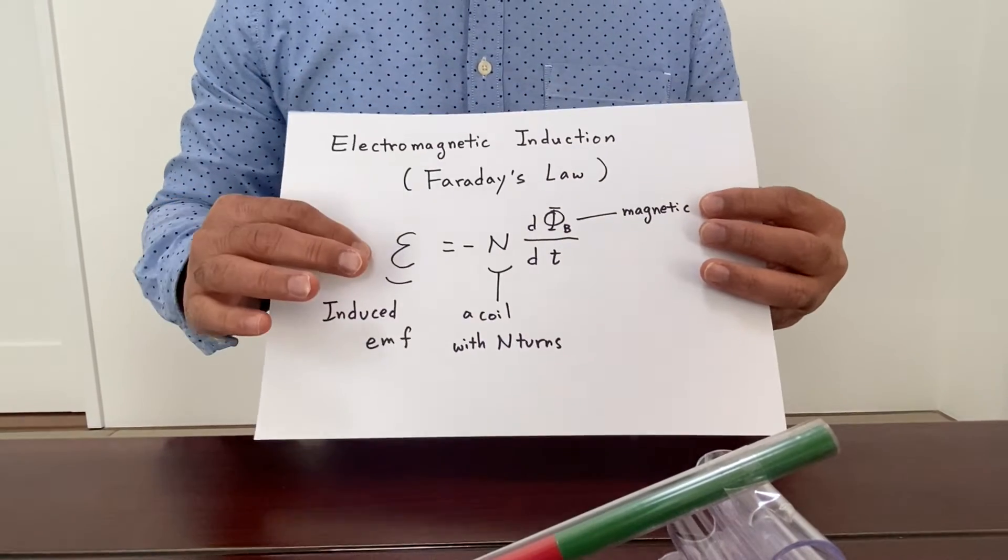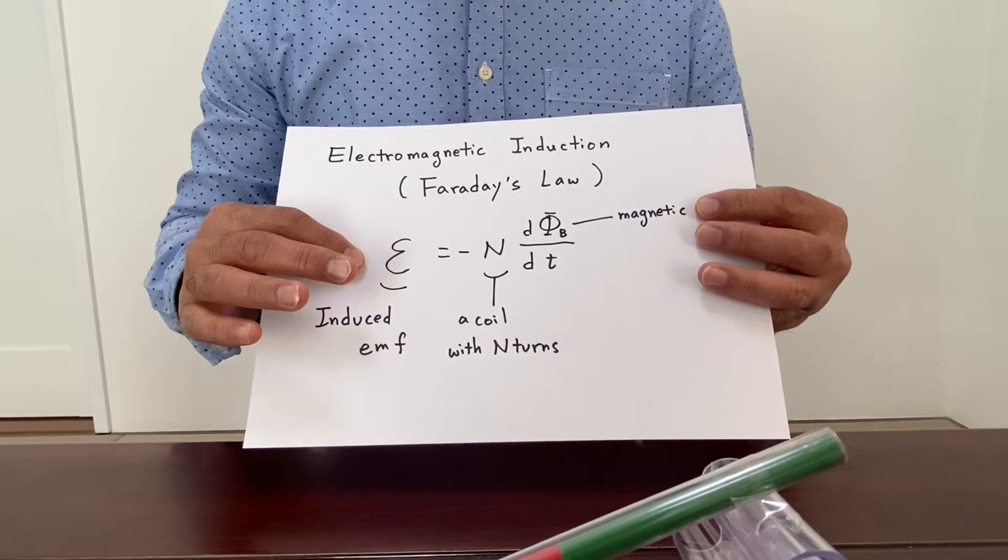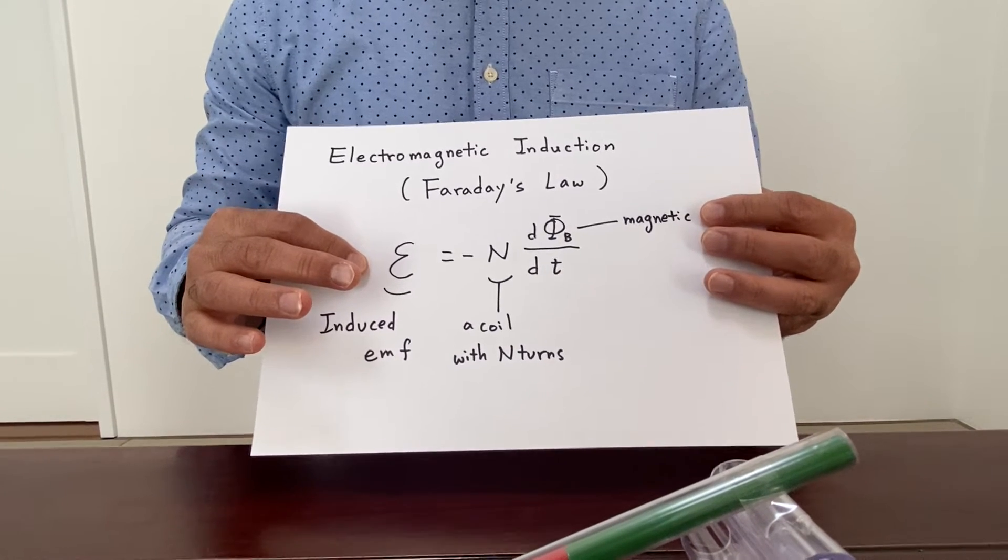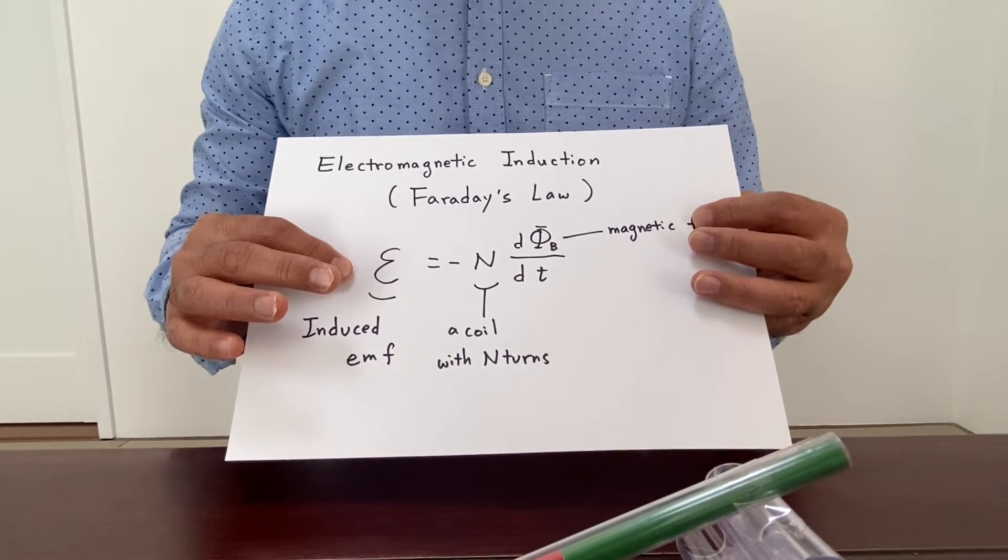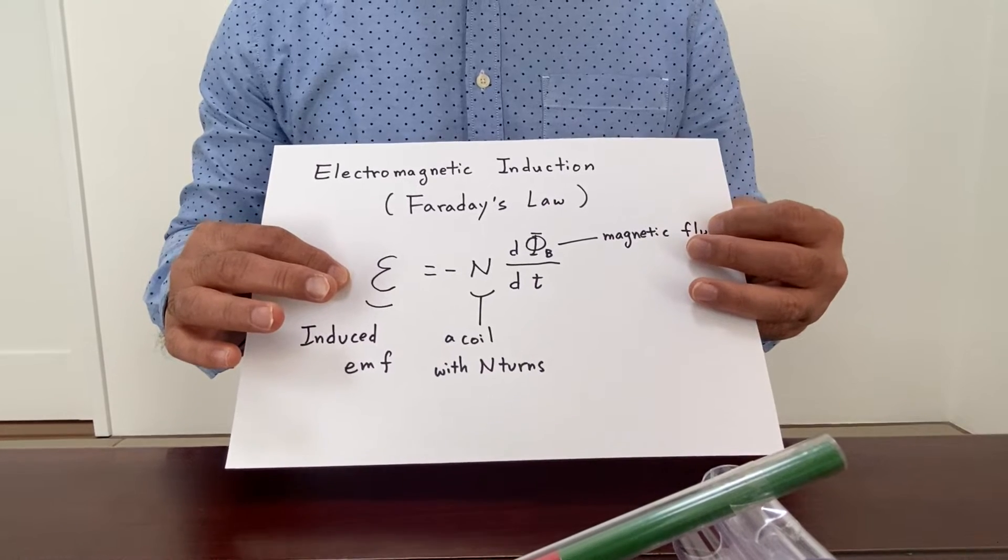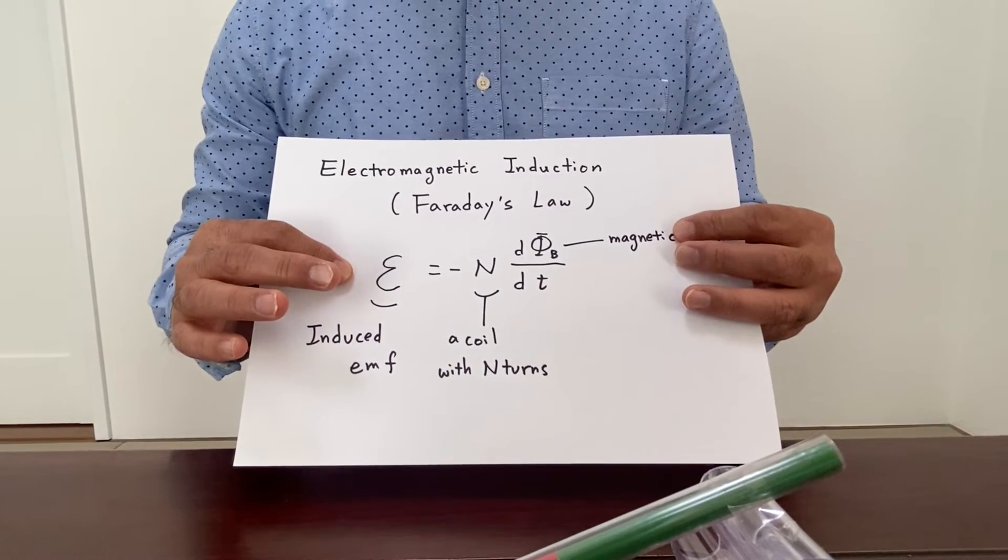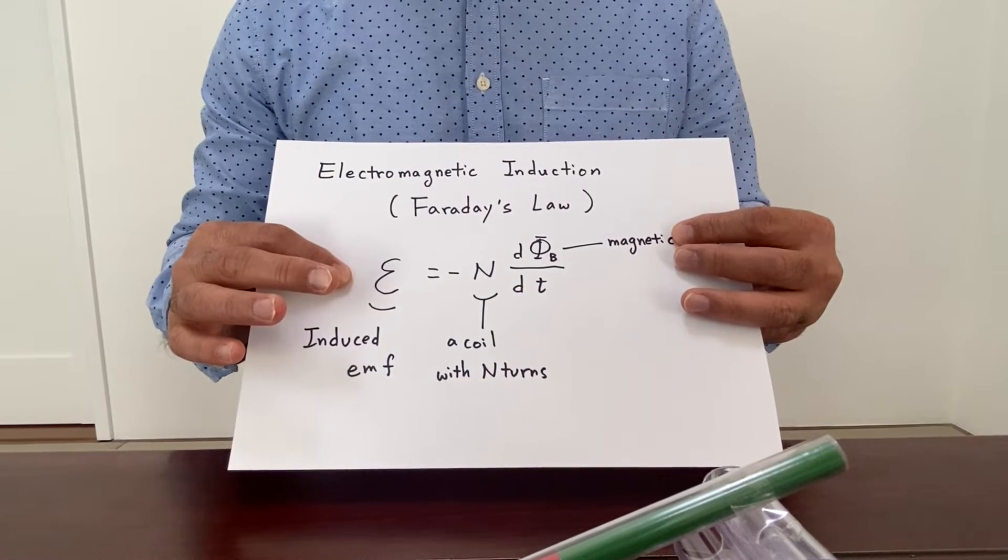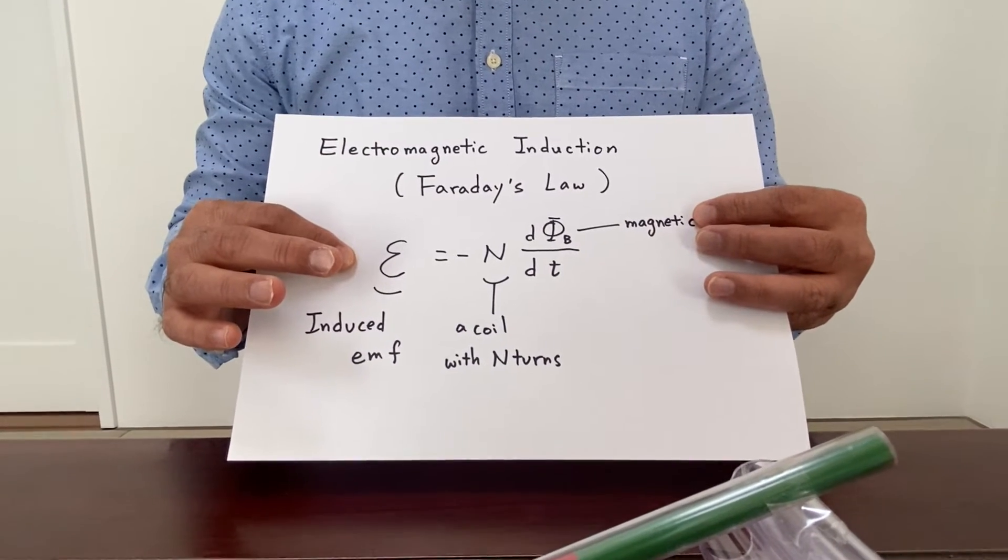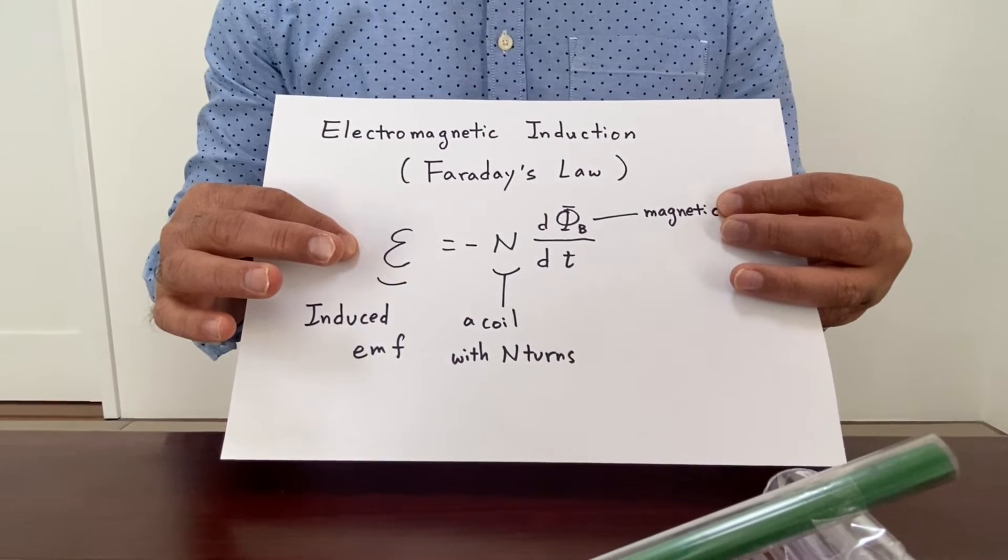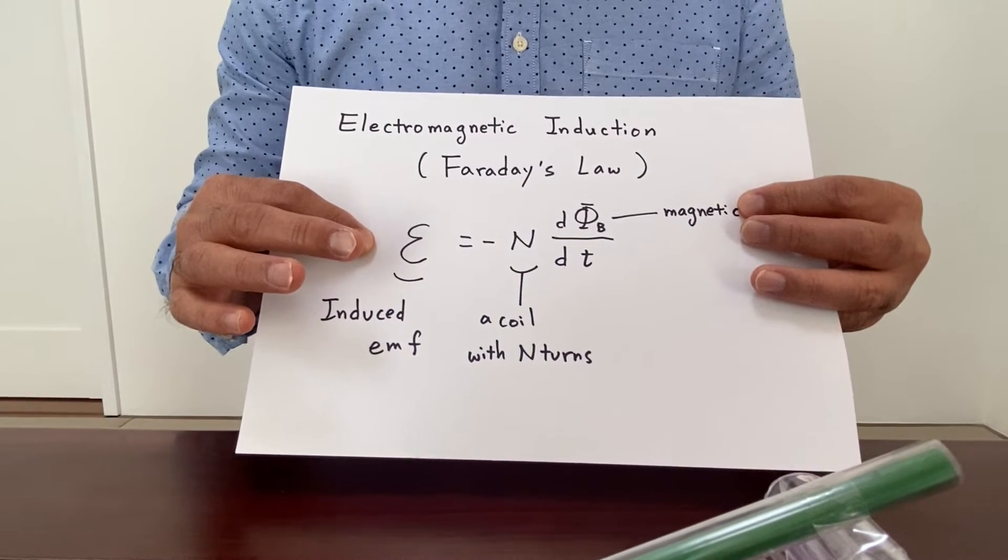Electromagnetic induction: E is equal to minus N times the derivative of Φ_B (magnetic flux) with respect to t. E is an induced emf and N is a number of turns. N turns of coils we consider. So this is Faraday's law.